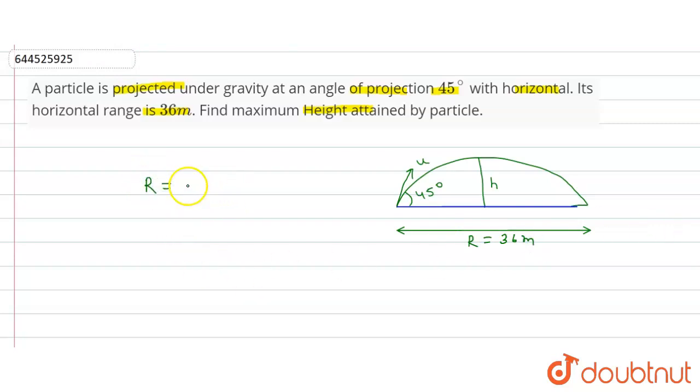So range equals 36 equals u² sin 2θ upon g. This will be u² sin 90 degrees upon g.